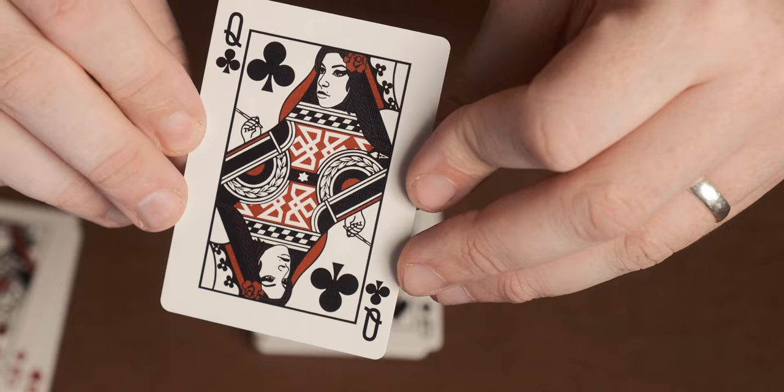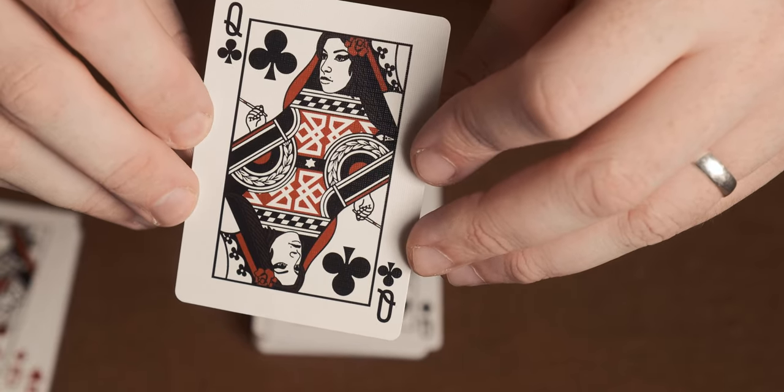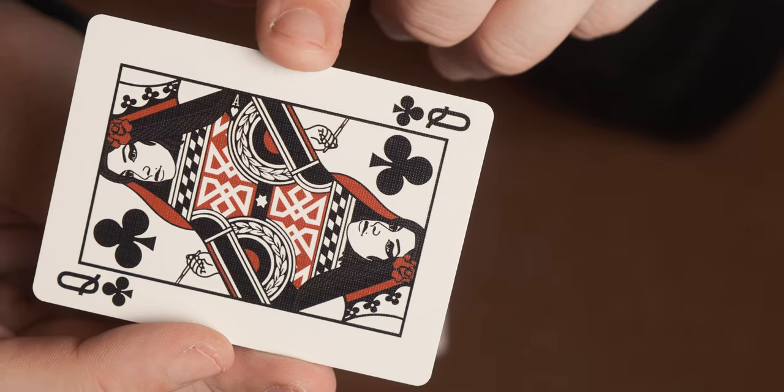Next one up is the Queen of Clubs and that's Amy Winehouse herself and again there's another hidden playing card reveal on it. See there on the side there's an Ace of Hearts reveal as well.